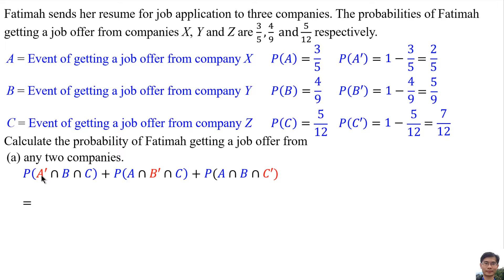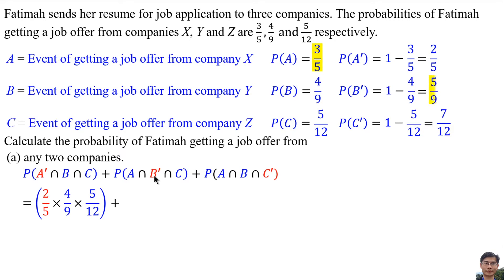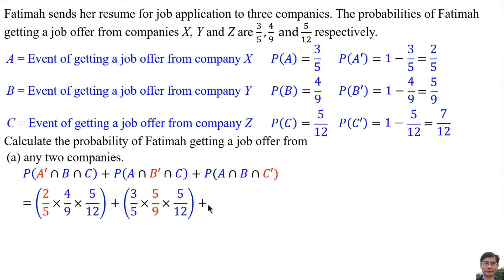The first possibility: A′ is 2 over 5, B is 4 over 9, and C is 5 over 12. Plus the second possibility: A is 3 over 5, B′ is 5 over 9, and C is 5 over 12. Plus the third possibility: A is 3 over 5, B is 4 over 9, and C′ is 7 over 12.